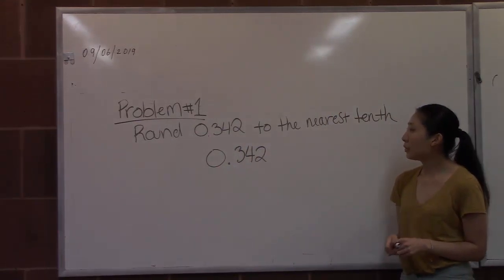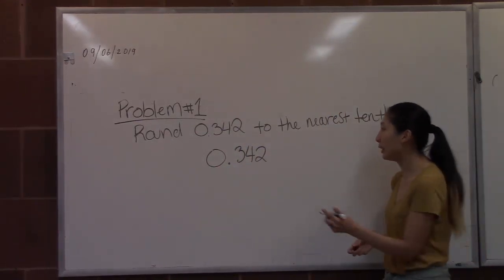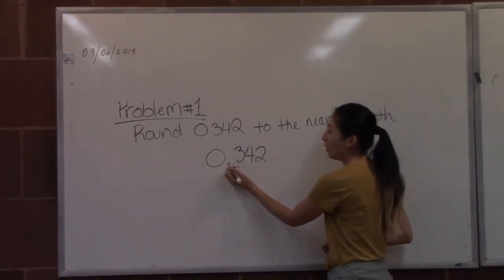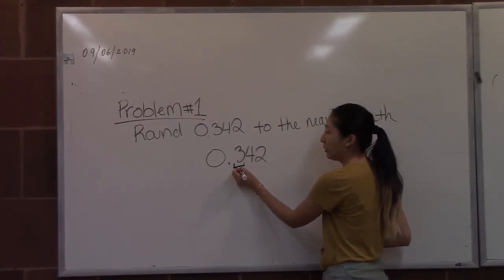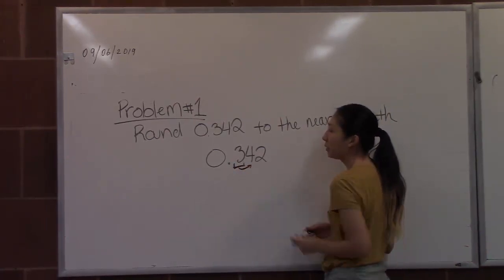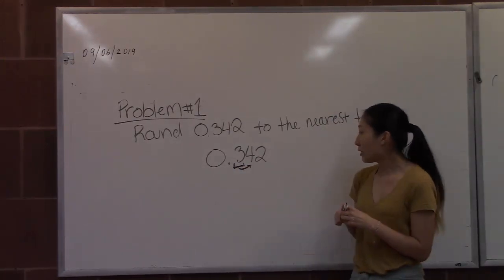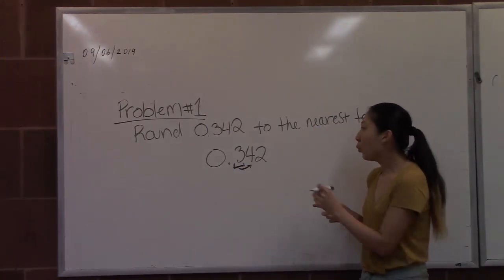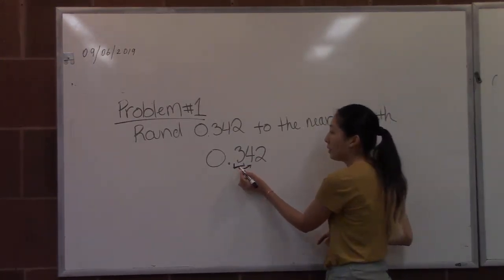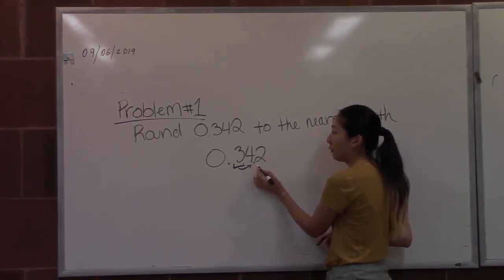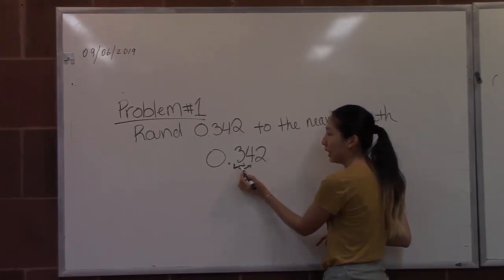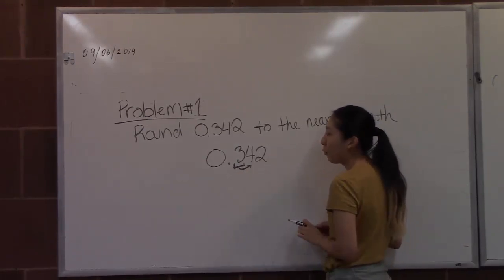In order to do this problem, we'll need to locate the tenths place. Once we locate the tenths place, we'll go one decimal place to the right. What I want you to remember: whatever number is to the right of the 3, if it's 5 or larger, we'll round up. If it's less than 5, we'll keep this number the same.